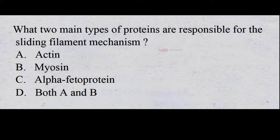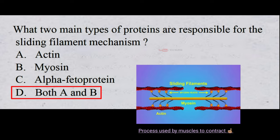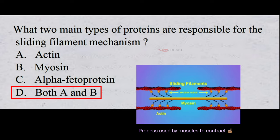What two main types of proteins are responsible for the sliding filament mechanism? A. Actin. B. Myosin. C. Alpha-fetoprotein. D. Both A and B. And the correct answer is D. Both A and B. The sliding filament theory explains the mechanism of muscle contraction based on muscle proteins that slide past each other to generate movement; actin and myosin are the proteins responsible.